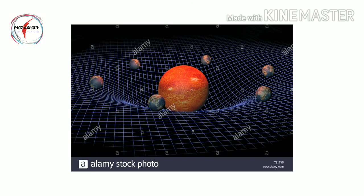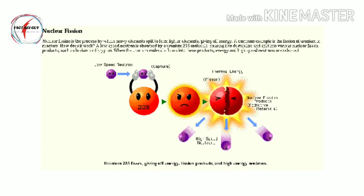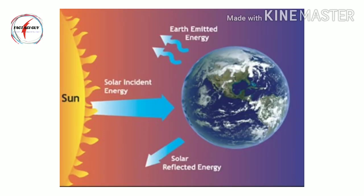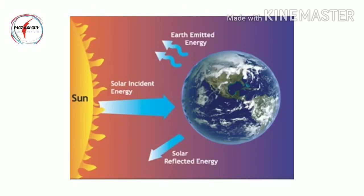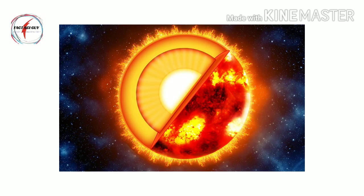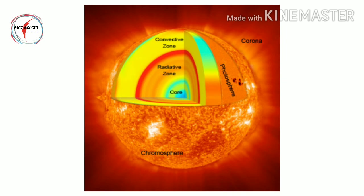At the core, the temperature is about 27 million degrees Fahrenheit, which is sufficient to sustain thermonuclear fusion. This is a process in which atoms combine to form larger atoms and in the process release a staggering amount of energy. In the sun's core, hydrogen gets fused to form helium. The energy produced in the sun's core powers the sun and produces all the heat and light that the sun emits. Energy from the core is carried outward by radiation, which bounces around the radiative zone, taking about 170,000 years to get from the core to the top of the convective zone.